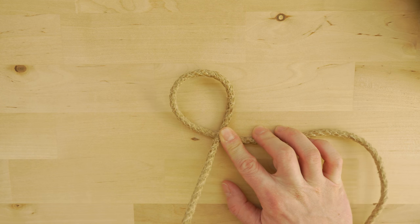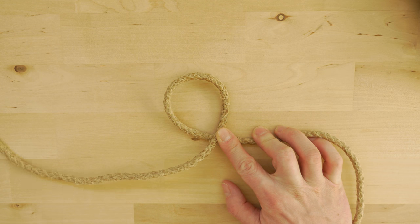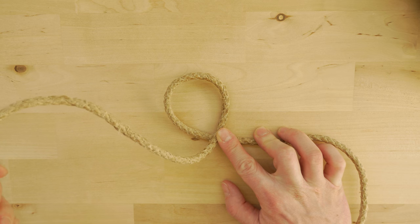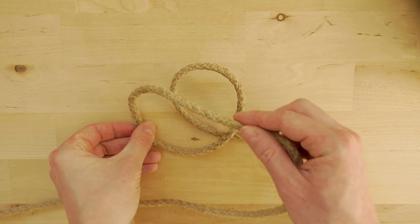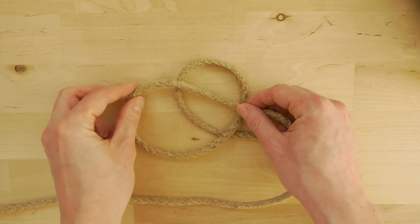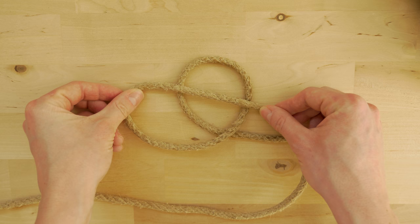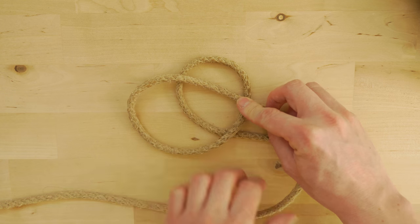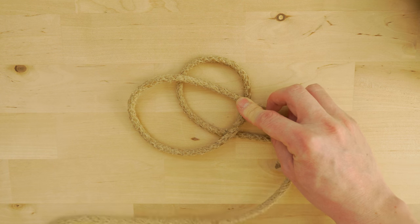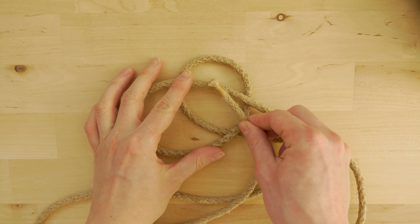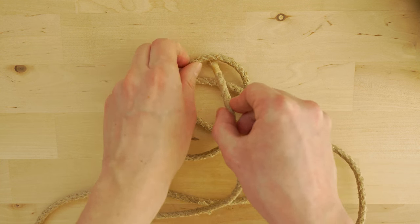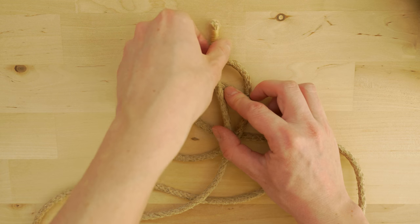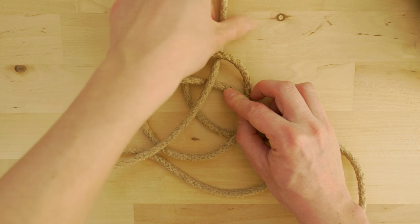Then what we are going to do is we are again going to take the same end, the left one, and fold it over the first loop, like this. Then using the same end, we are going to travel over these two cords and under this one. So here, and then pull your rope through.